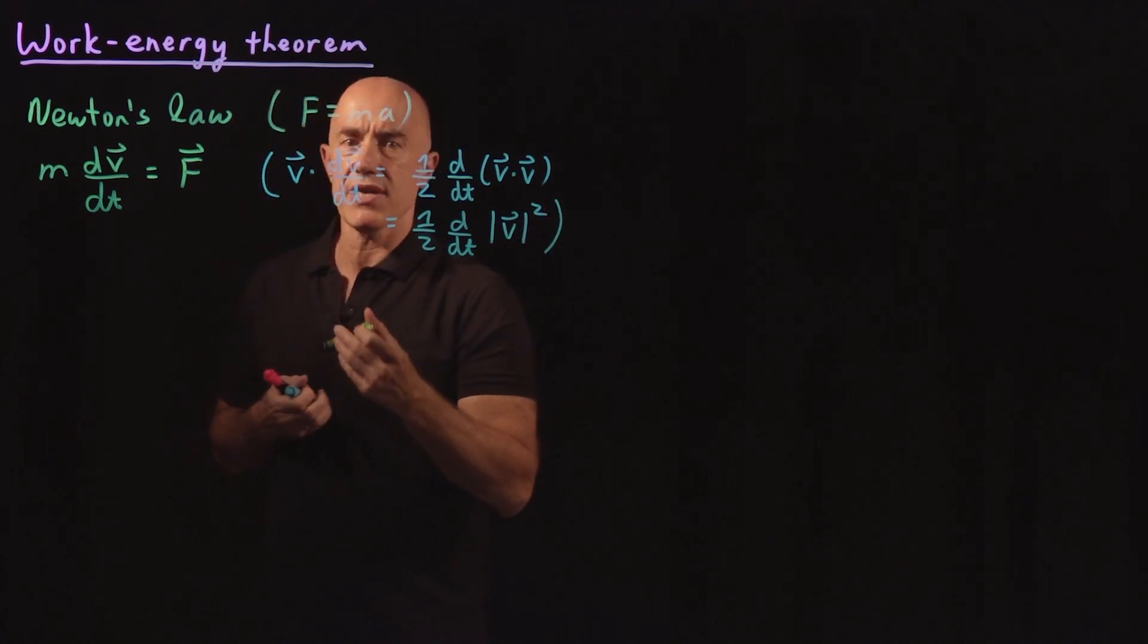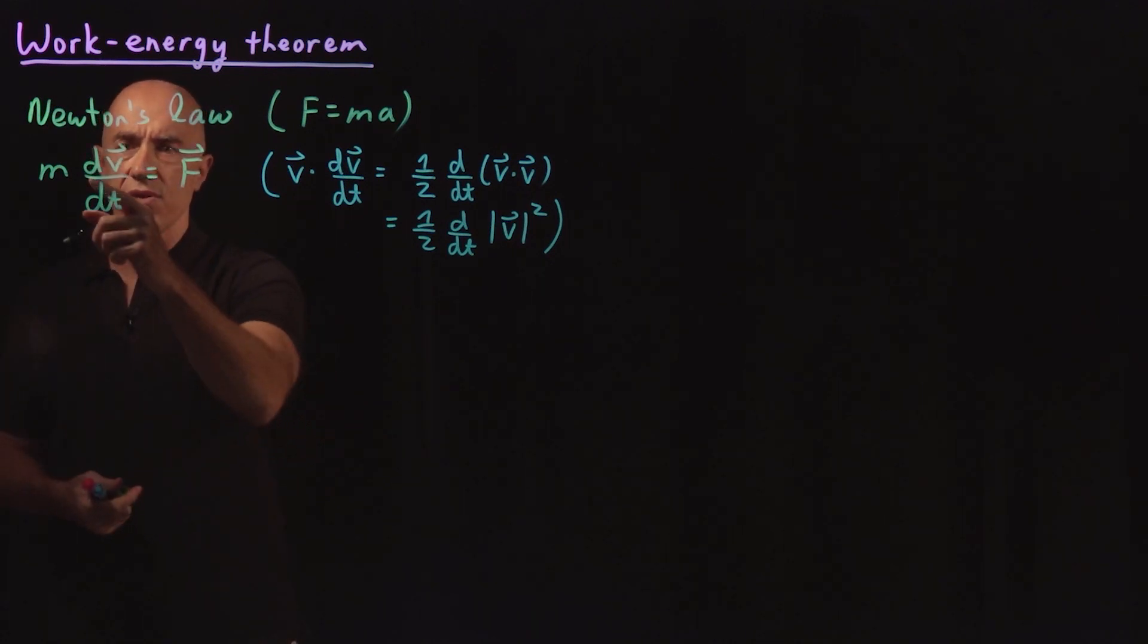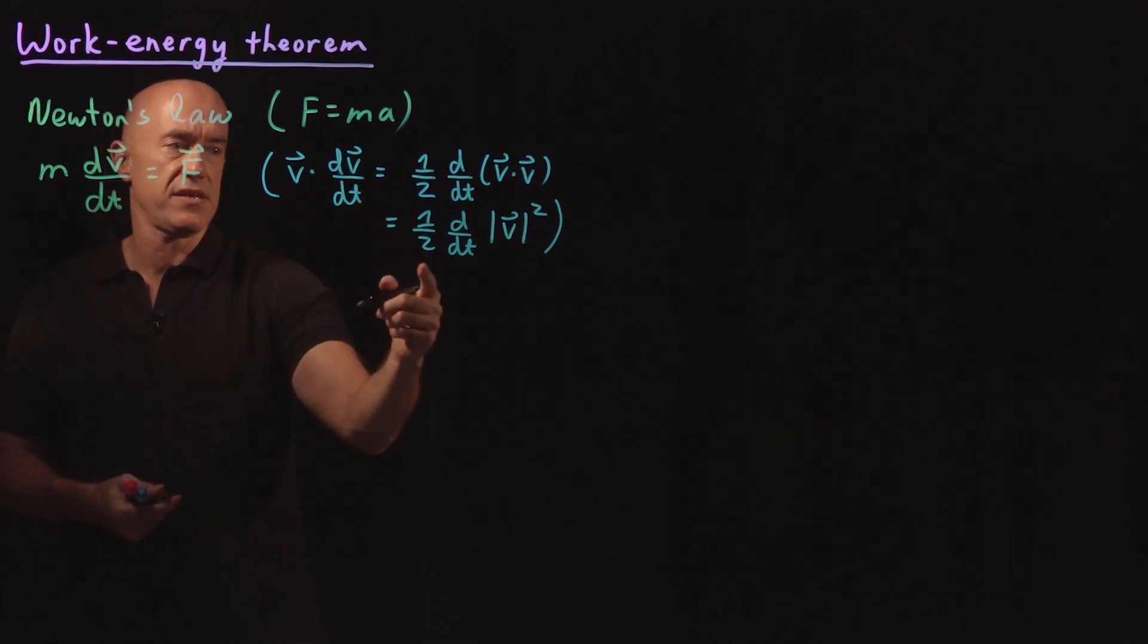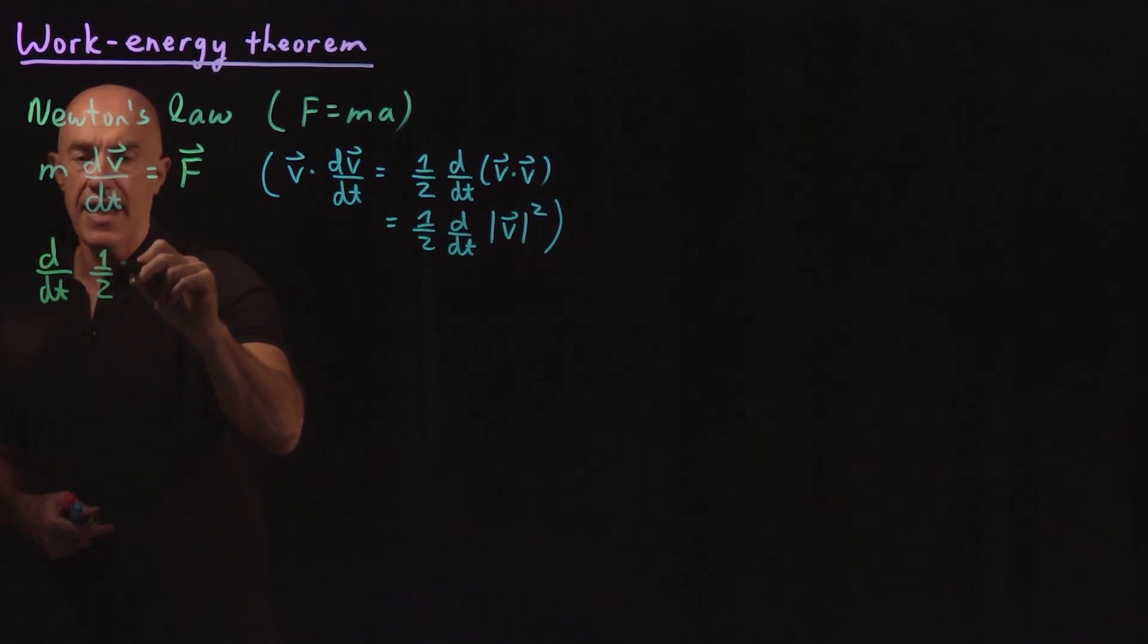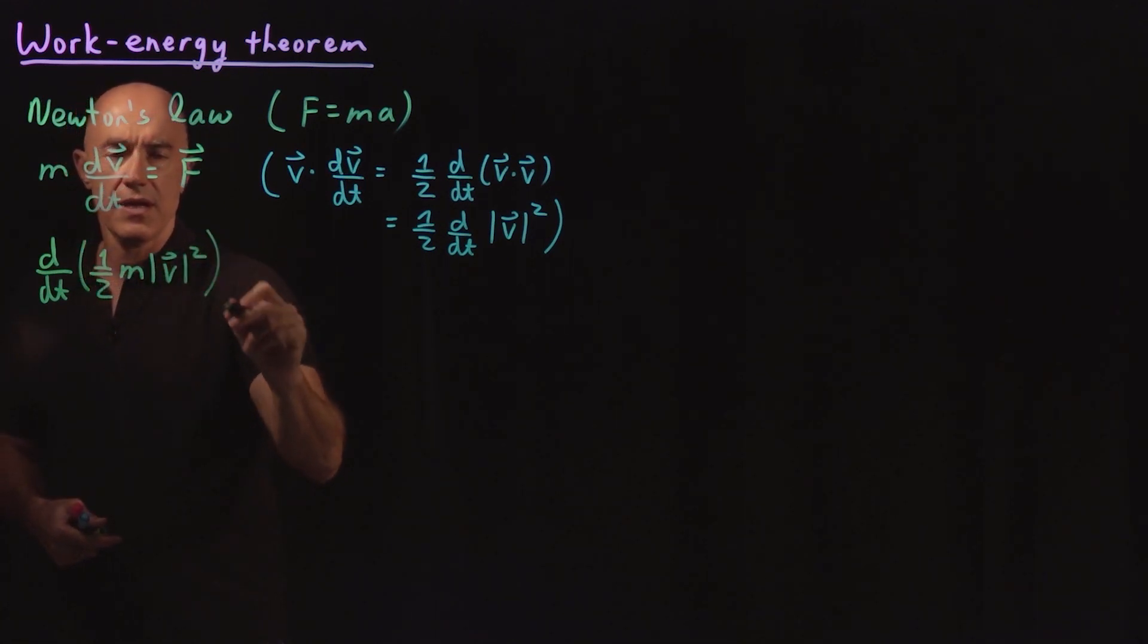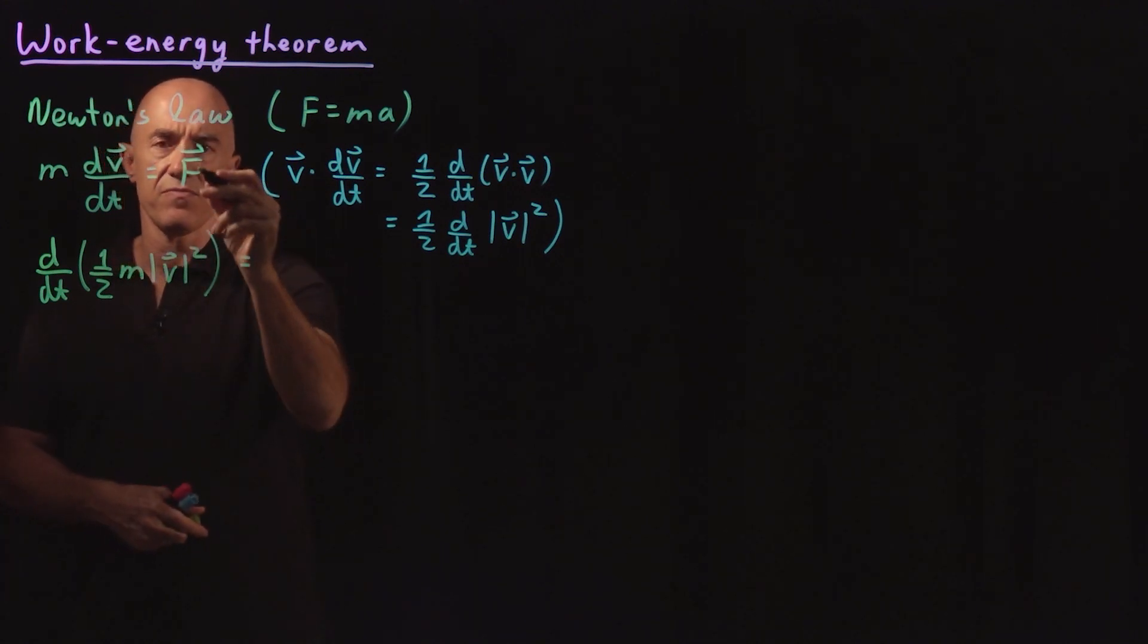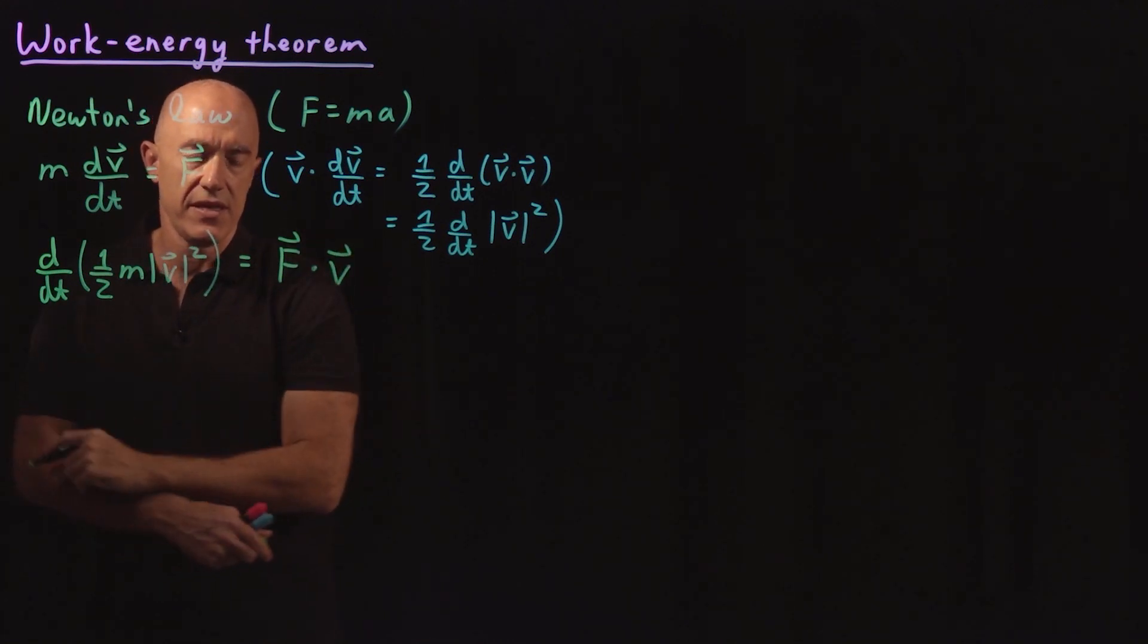So we multiply both sides of this equation by V, and we use V dot dV/dt is this one. So the left-hand side then will become d/dt of one half m V squared. And the right-hand side, we just dotted this with V, will become F dot V.